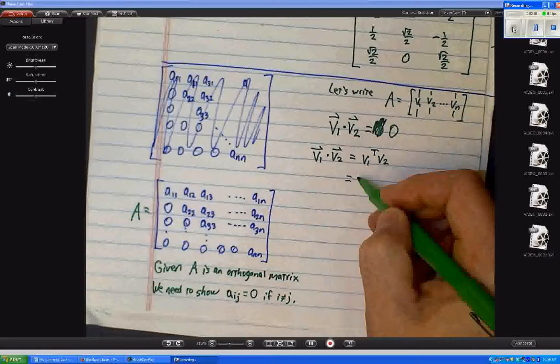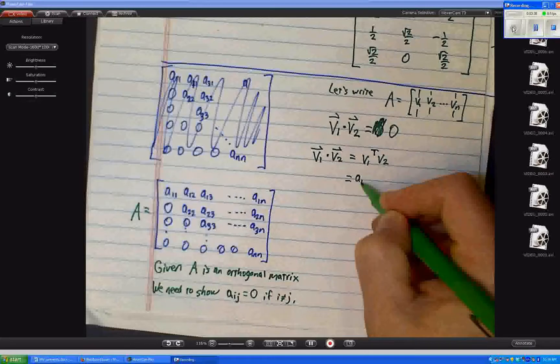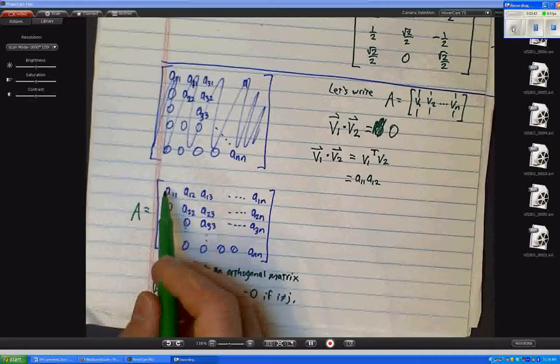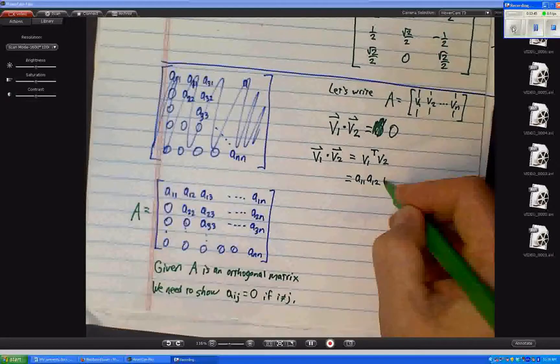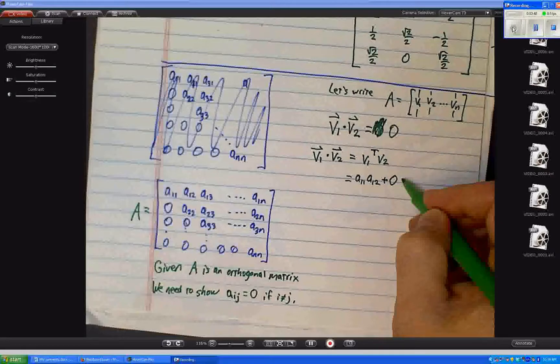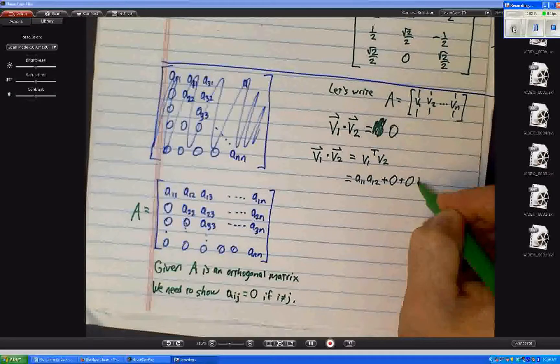Well, it equals A11, A12, right? So those are going to get multiplied together, plus, well, 0 plus 0, right? Everything else is a bunch of 0s.